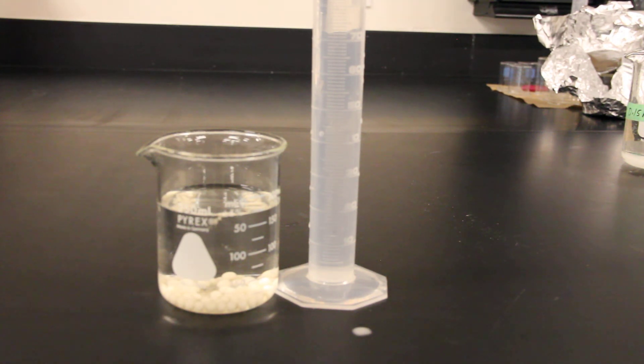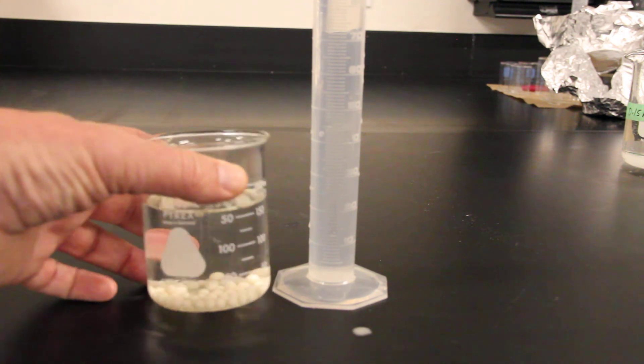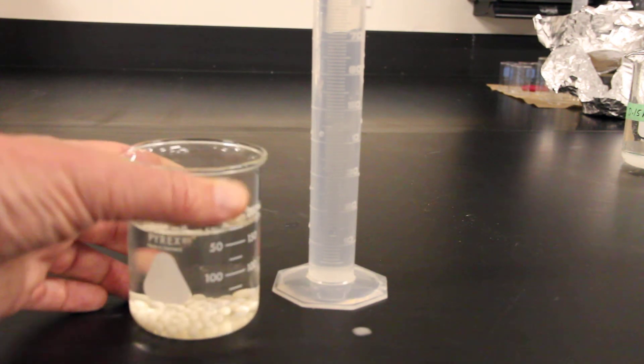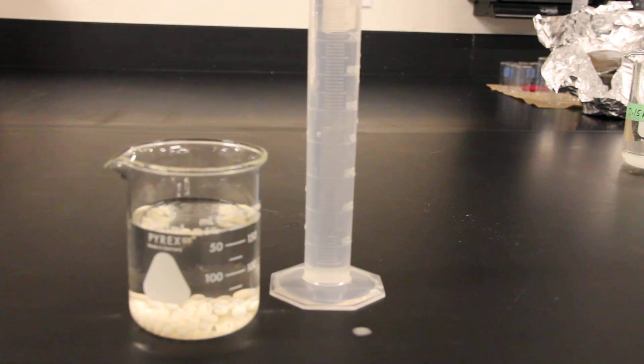If I drop one of those yeast spheres into this column of hydrogen peroxide, the catalase in the yeast should break that down and in the process produce oxygen bubbles that will make those yeast spheres buoyant. So they'll sink to the bottom and then over time they'll float back up.